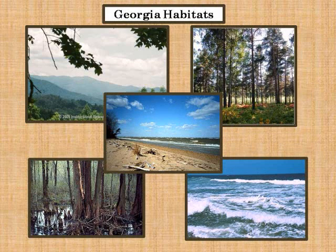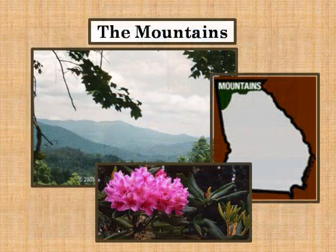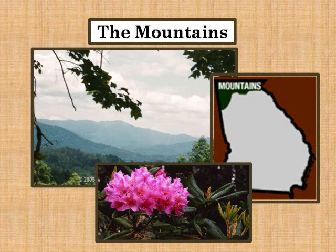Georgia is made up of many habitats: the mountains, the Piedmont, the swamps and marshes, the coast, and the Atlantic Ocean. The Blue Ridge Mountains in Georgia were formed over a billion years ago. Brasstown Bald is the highest point in Georgia, reaching over four thousand seven hundred and eighty-four feet above sea level.